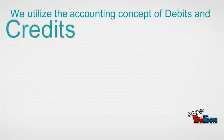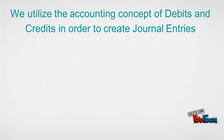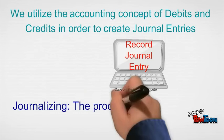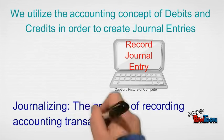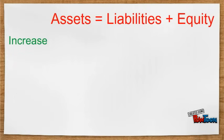We utilize the accounting concept of debits and credits in order to create journal entries. Journalizing is the process of recording accounting transactions. When we increase one side of the accounting equation, we would also increase the other side.